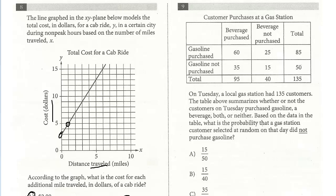Sometimes you have these probability questions and they might say, given that a customer purchased a beverage, but that's not the case. We're just picking all the customers who visited the gas station. So right away, we know that's going to be out of 135.